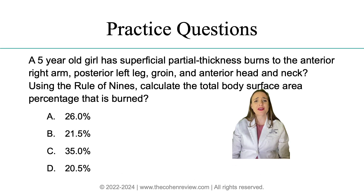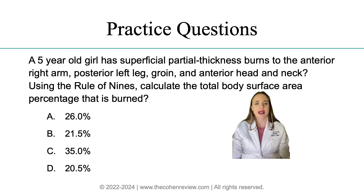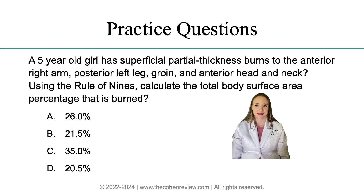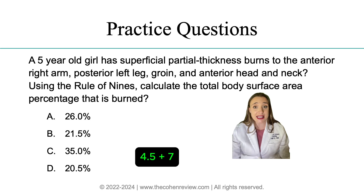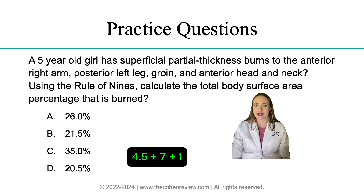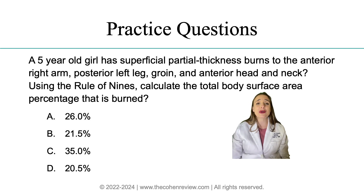Question number three: a five-year-old girl has superficial burns to the anterior right arm, posterior left leg, groin, and anterior head and neck. Using the rule of nines, calculate the total body surface area percentage that is burnt. A: 26%, B: 21.5%, C: 35%, or D: 20.5%. The correct answer is B, 21.5%. Anterior right arm: 4.5%. Posterior left leg: 7%, because 14% is for the entire leg. The groin is 1% — gender doesn't matter. Anterior head and neck: 9%, because 18% is for both anterior and posterior of the head and neck.